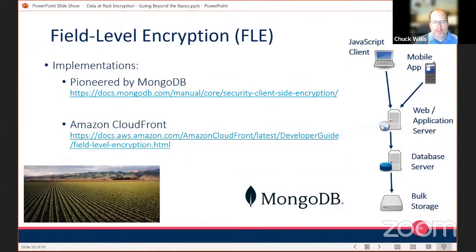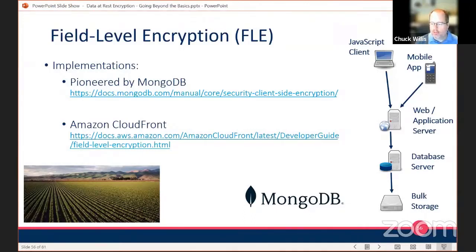There are really two main implementations of field level encryption. MongoDB was really the pioneer for this — they created a whole mechanism around it that you can read about in their documentation, with full support as part of their client libraries used to connect to a Mongo database. Amazon also does this, interestingly as part of their CloudFront, where they're basically doing field level encryption starting all the way at the HTTP field level — encrypting data as soon as possible in the overall stack.